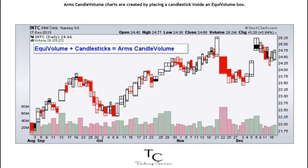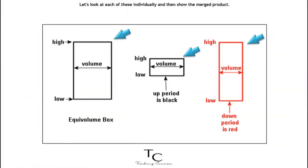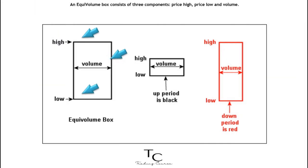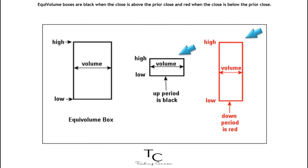Arms Candle Volume charts are created by placing a candlestick inside an equi volume box. The equi volume box dictates the width based on relative volume. An equi volume box consists of three components: price high, price low, and volume. The price high forms the upper boundary, the price low forms the lower boundary, and volume dictates the width.